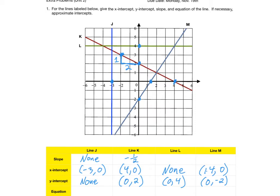For line L, we've got a horizontal line. And horizontal lines have slope 0.